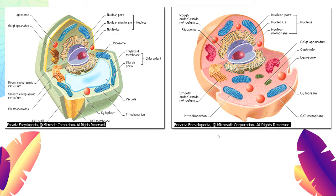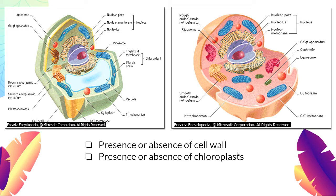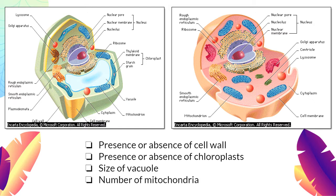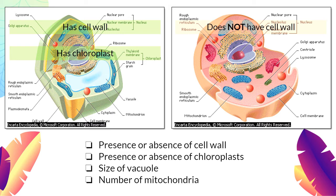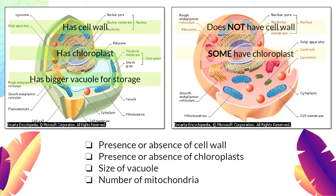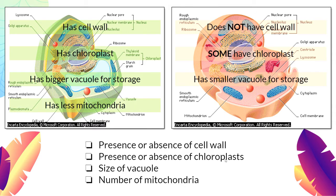To clarify the differences between plant and animal cells: in terms of cell wall, plant cells have a cell wall while animal cells do not. Plant cells have chloroplasts; some animal cells could also have chloroplasts. Plant cells have a bigger vacuole for storage of water and food, while animal cells have a smaller vacuole. Plant cells have fewer mitochondria, and animal cells have more mitochondria.